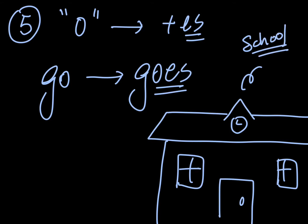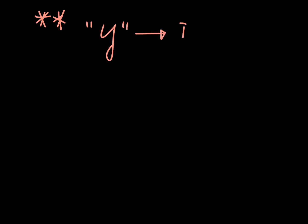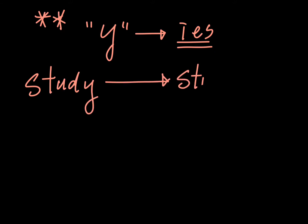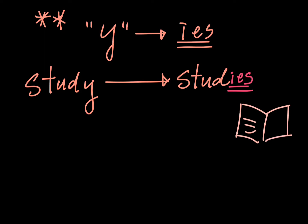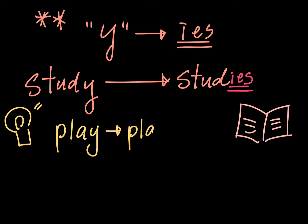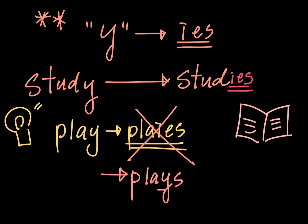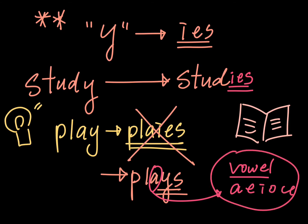The last thing I'm going to talk about: if the verb ends with Y, then we change it to IES. Like 'study' changes to 'studies' — the Y is changed to I and then we add ES. But there are some exceptional cases, like 'play' — we don't change it to 'plies' with IES, we just add S, so it becomes P-L-A-Y-S. This is because of the vowel before the Y. If there is a vowel before the Y, we don't change it to IES, we just add S.